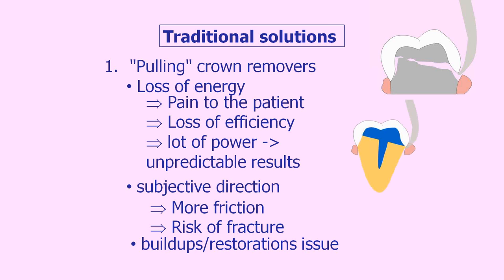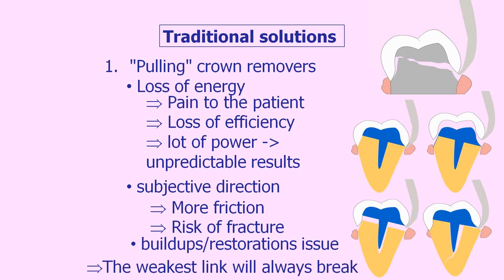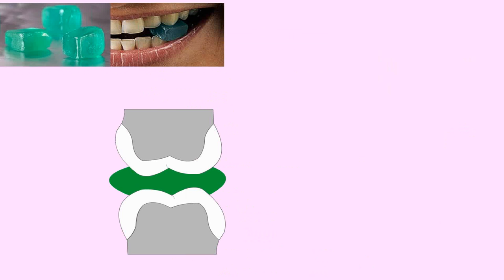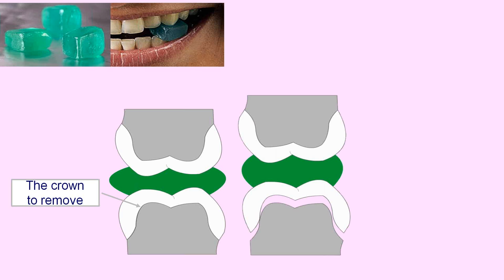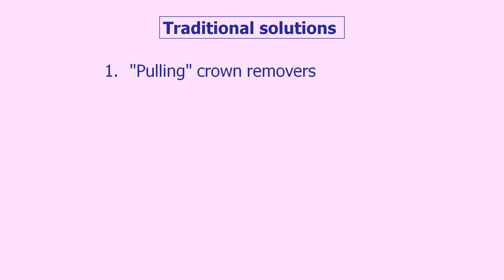When you pull on crowns, especially when you have buildups underneath, you never know what's going to happen. If you're lucky, the crown comes off cleanly, but if not, you could remove the crown and the restoration — or even worse, break the root, which is weakened by the post. Always remember: the weakest link will always break. The same applies to tools like the Richwheel crown remover, especially if there's an antagonist crown — you could inadvertently damage the opposing tooth.